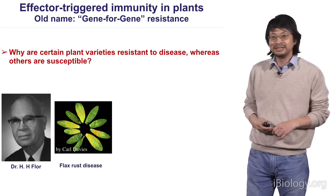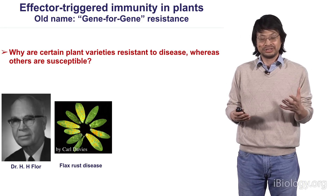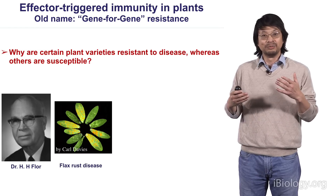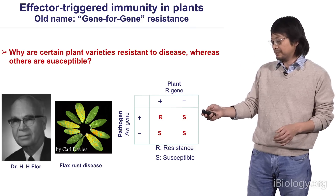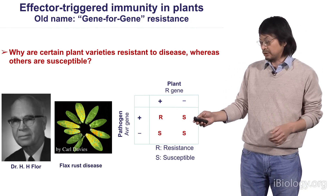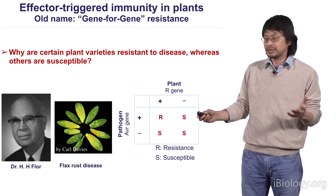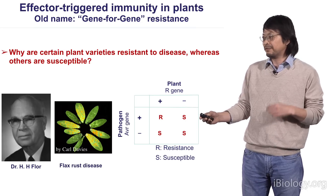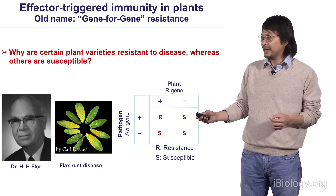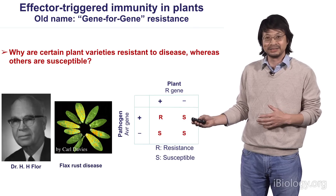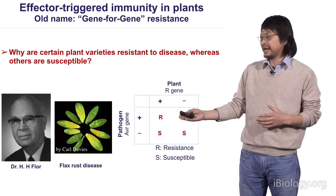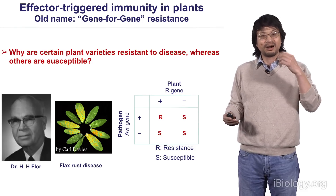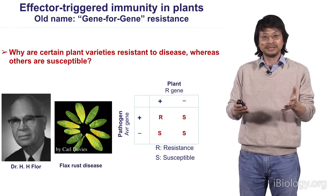He came up with an interesting hypothesis called the gene-for-gene hypothesis. He proposed that the pathogen has so-called avirulence genes, or avr genes, in some strains, and some cultivars that are resistant contain so-called resistance genes, or R genes. If you take a pathogen without any avirulence genes, it's going to infect plants that either have R genes or no R genes, because it's virulent. But if a pathogen has an avirulence gene, it will only infect plants with no corresponding R genes. If the plant has R genes that can recognize this avirulence gene, then the plant will be resistant. You need both the R genes in the plant and avirulence genes in the pathogen for resistance.